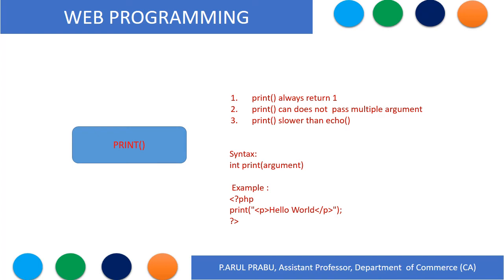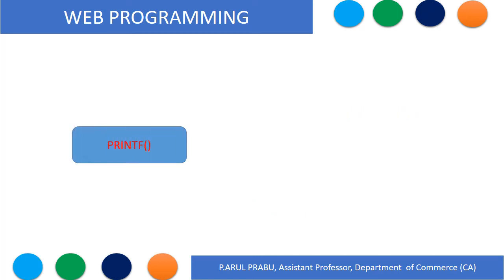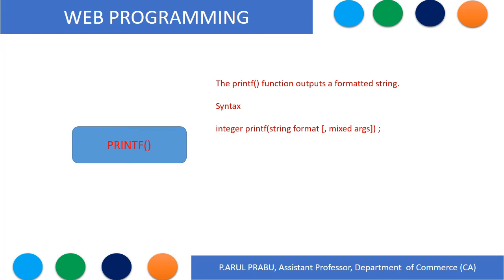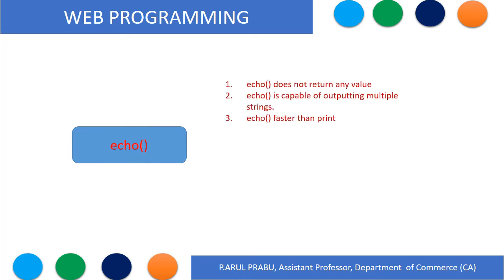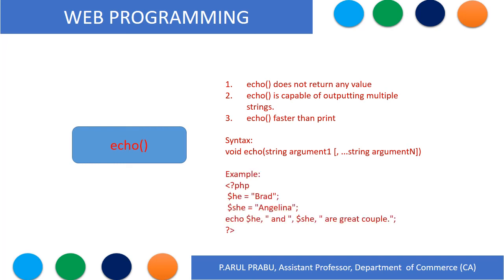The syntax for print is: print(argument). The echo function syntax is: void echo(string argument, string argument). For example, opening a PHP tag, assigning a variable he as 'Rod' and a variable she as 'Angelina', then using echo to output 'he and she are a great couple'. The output would be: Rod and Angelina are a great couple.